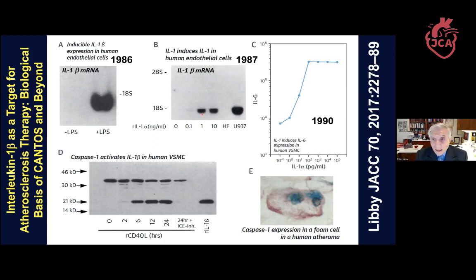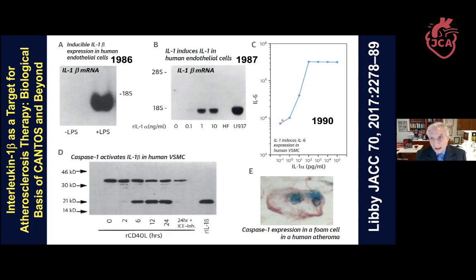We then showed that IL-1 can induce another pro-inflammatory cytokine — interleukin-6. Here is another amplification loop: a little bit of IL-1-alpha will beget huge amounts of interleukin-6. This is from smooth muscle cells, though it also works with endothelial cells. Note that this is a log-log scale — so this is a huge induction of IL-6.